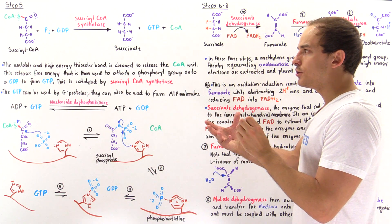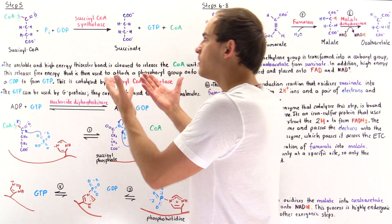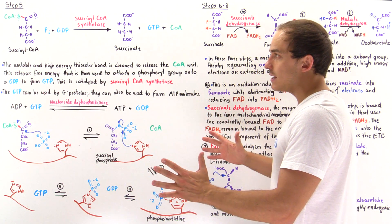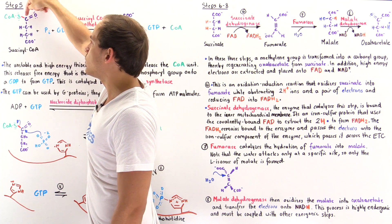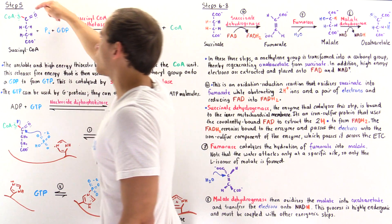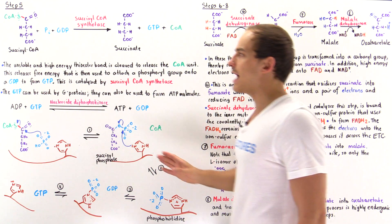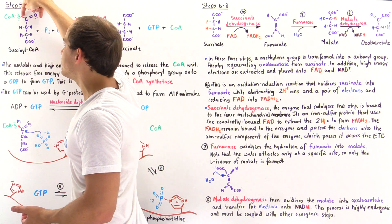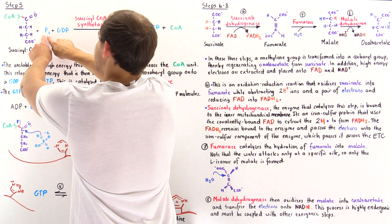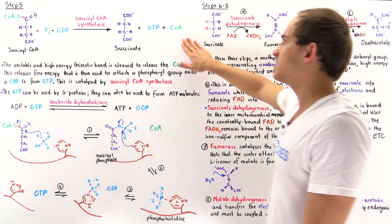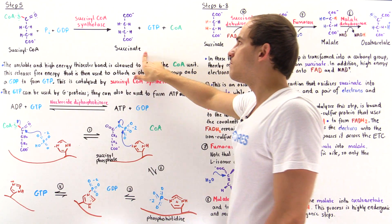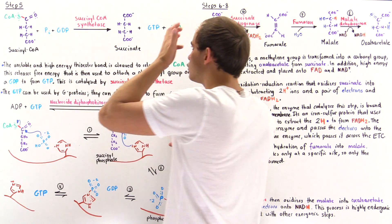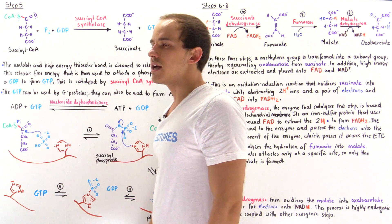We have to couple this endergonic process with an exergonic one. Remember, in succinyl coenzyme A, the thioester bond between the carbon and the sulfur of the coenzyme A molecule is a very unstable, high-energy bond. When we cleave this bond, it releases free energy, and that free energy drives the attachment of the phosphoryl group onto the GDP to form the GTP. In the process, we also release coenzyme A and form the 4-carbon succinate molecule that reacts in step 6. This reaction is catalyzed by succinyl coenzyme A synthetase.